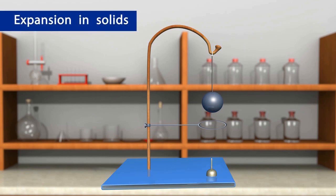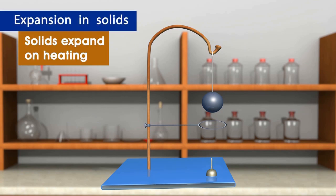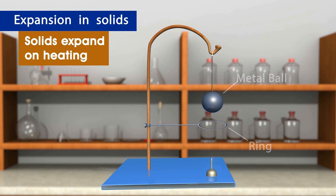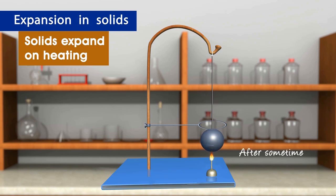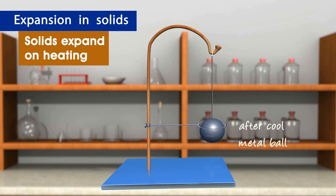Expansion in solids: solids expand on heating. We can demonstrate this with the ring and ball apparatus, which consists of a metal ring and a metal ball. At normal temperature, the ball just passes through the ring. Now heat the ball and try to pass it through the ring — it will not pass through. The ball has expanded on heating. Cool the ball to normal temperature and it will pass through the ring again.